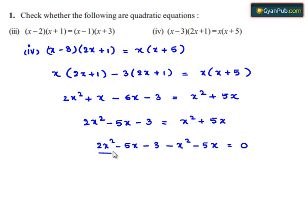So 2x square and minus x square becomes x square, minus 5x and minus 5x becomes minus 10x, and we have minus 3. So this is equal to 0.